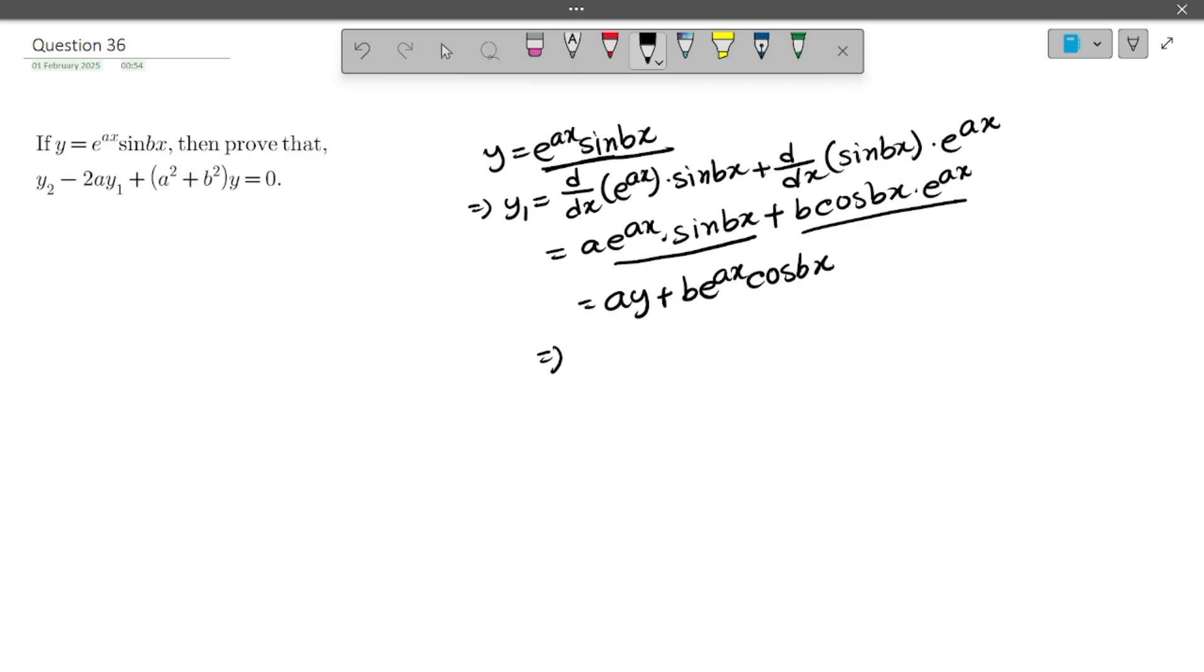Now we will find the second order derivative. So y₂ equals, it will be ay₁ plus, for this term we will use the uv method again. So it will be d/dx of b e to the power ax into cos bx plus d/dx of cos bx into b e to the power ax.